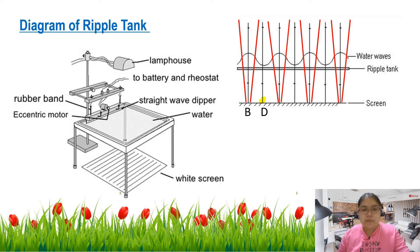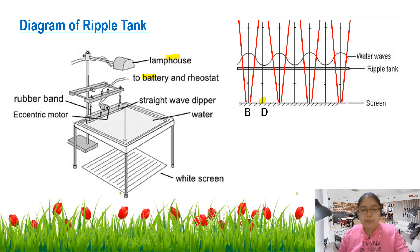So this is the diagram when we draw the ripple tank — you must draw about the lamp. After that we have a battery, or you join with the power supply. Then the wire joins with the motor and rubber band. After this should be the water, and then the screen. So we see the water wave diagram should be one straight line — this one is a plane wave. After that, there's a bright and also dark fringes.